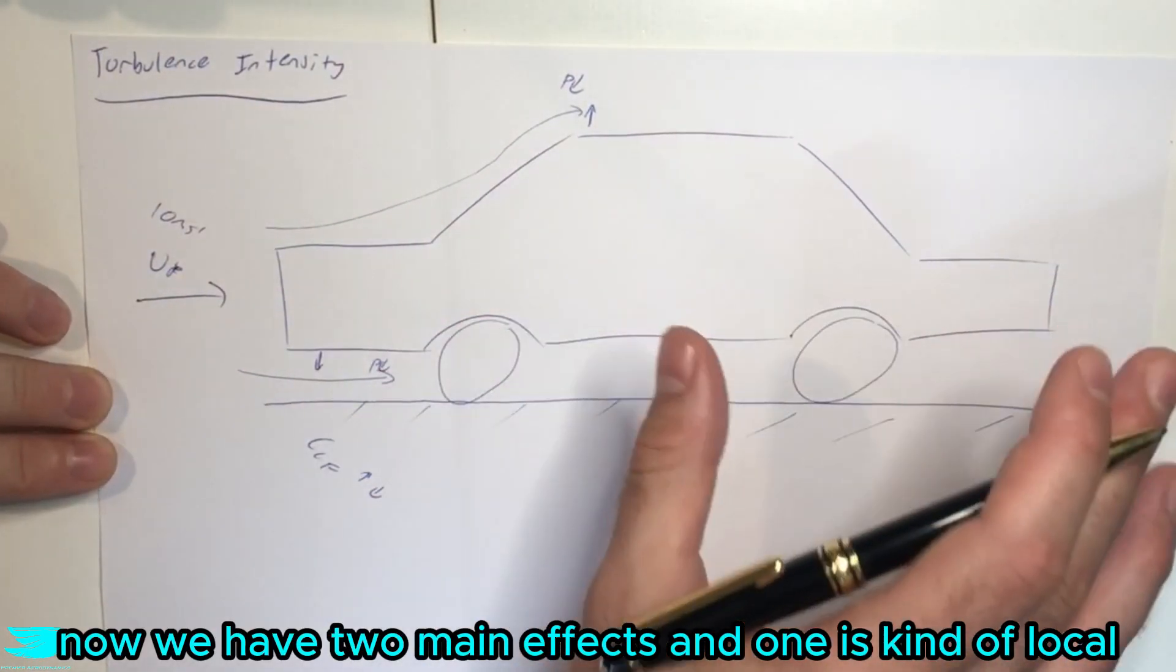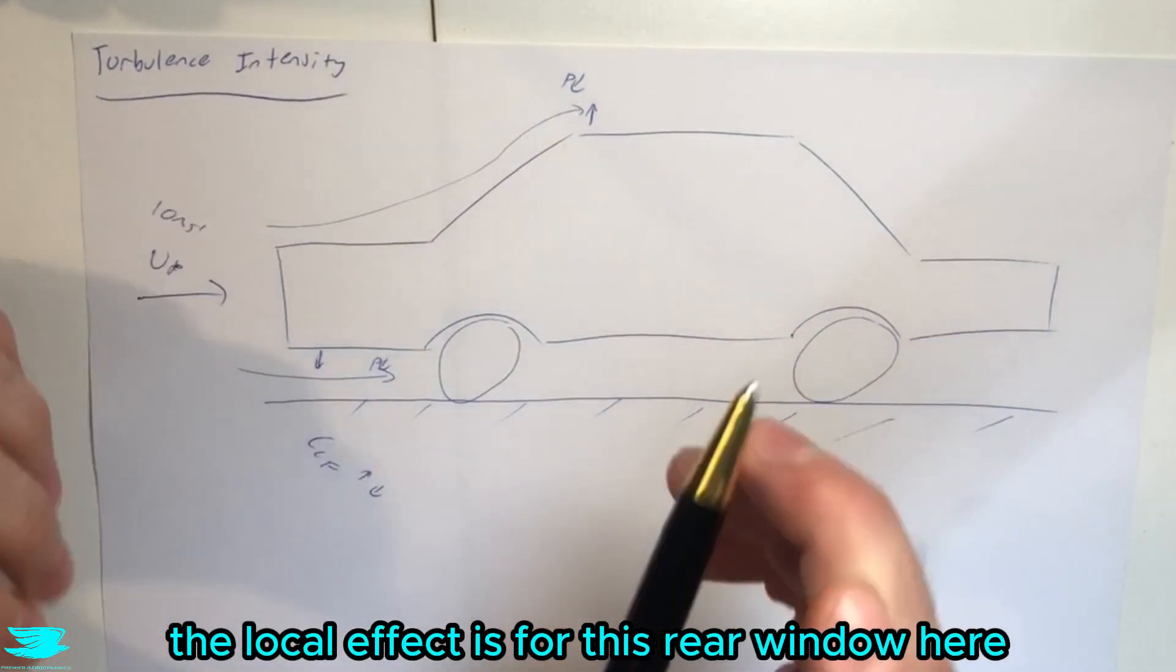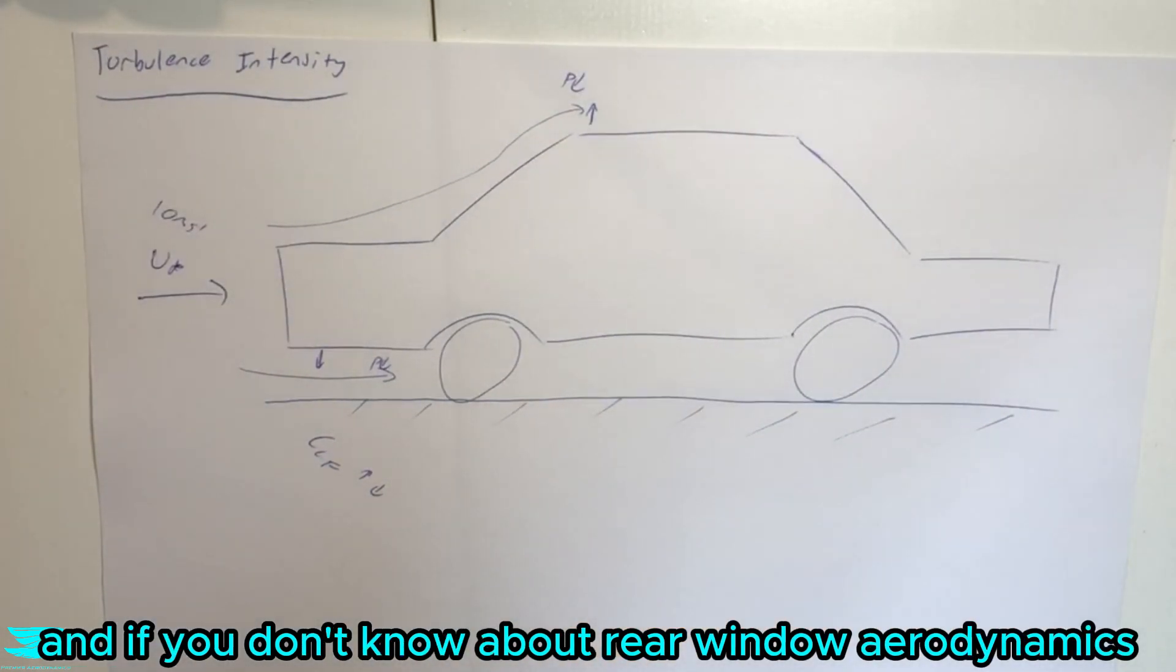now we have two main effects and one is kind of local, one is more inherited from upstream. The local effect is for this rear window here. And if you don't know about rear window aerodynamics, check out this video here.